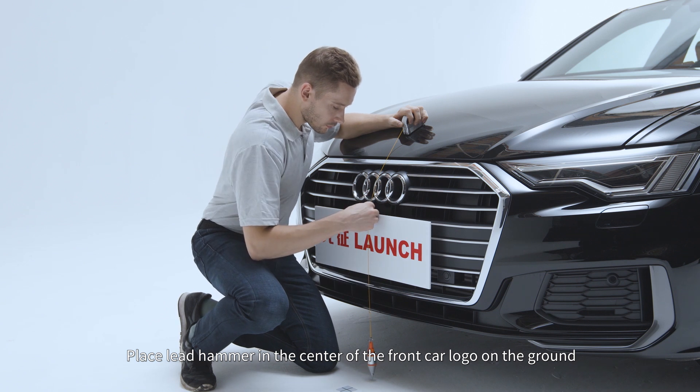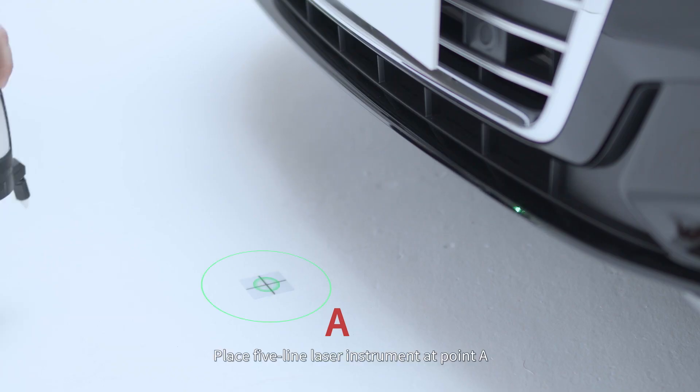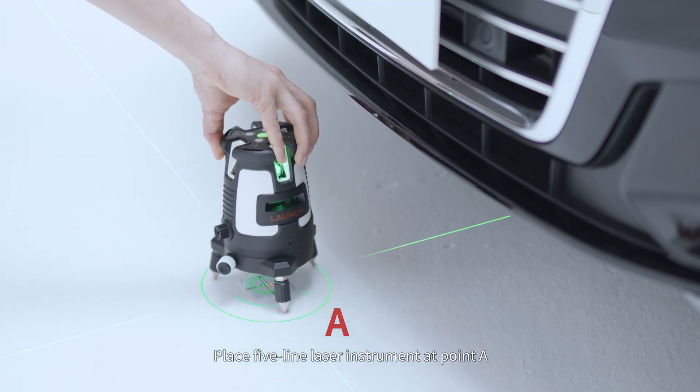Place lead hammer in the center of the front car logo on the ground. Mark point A. Place 5-Line Laser Instrument at point A.